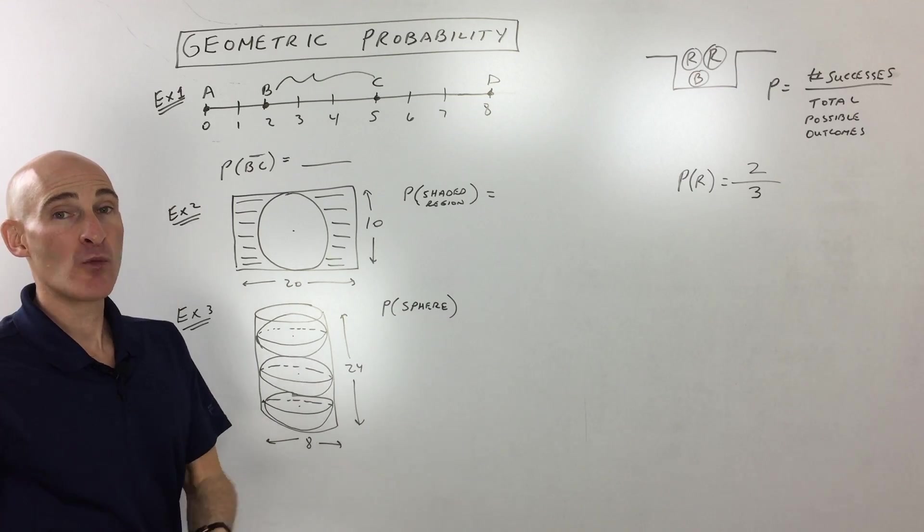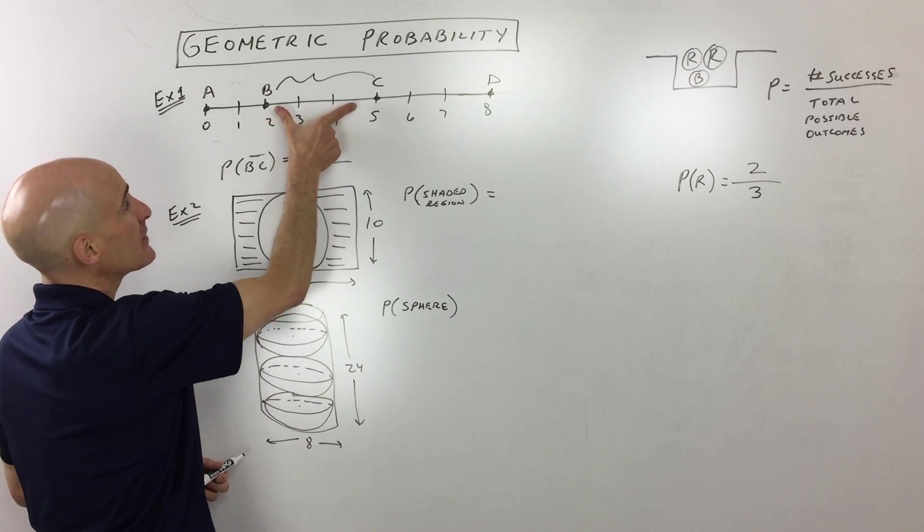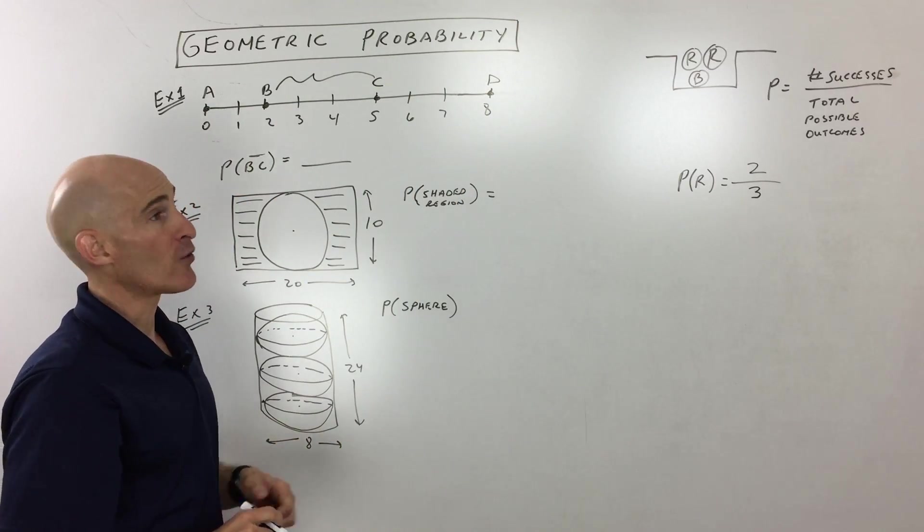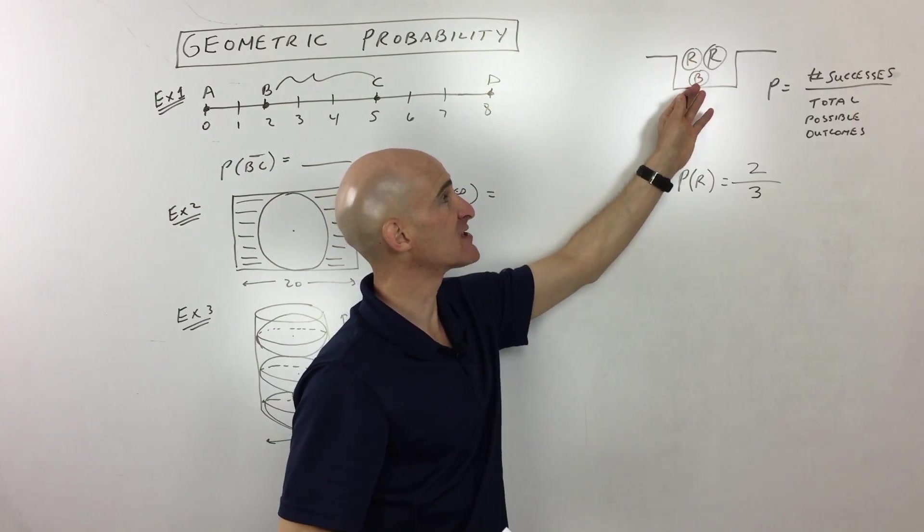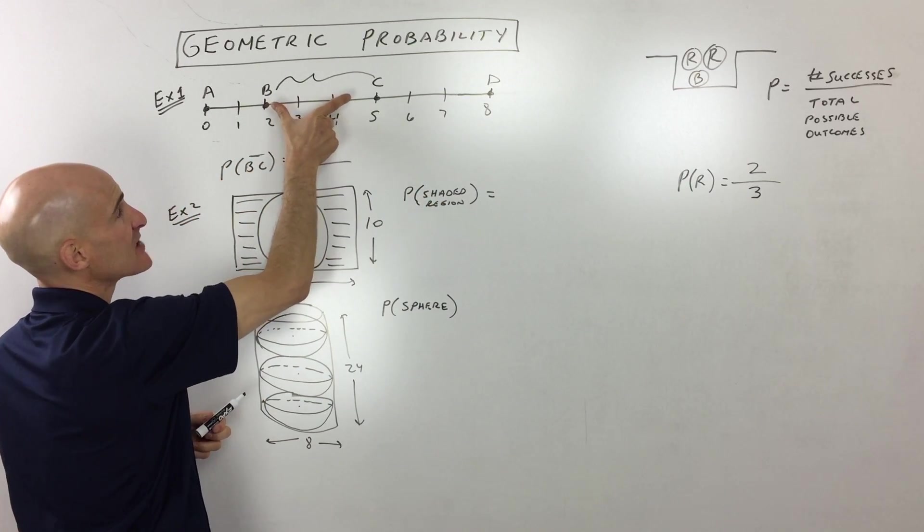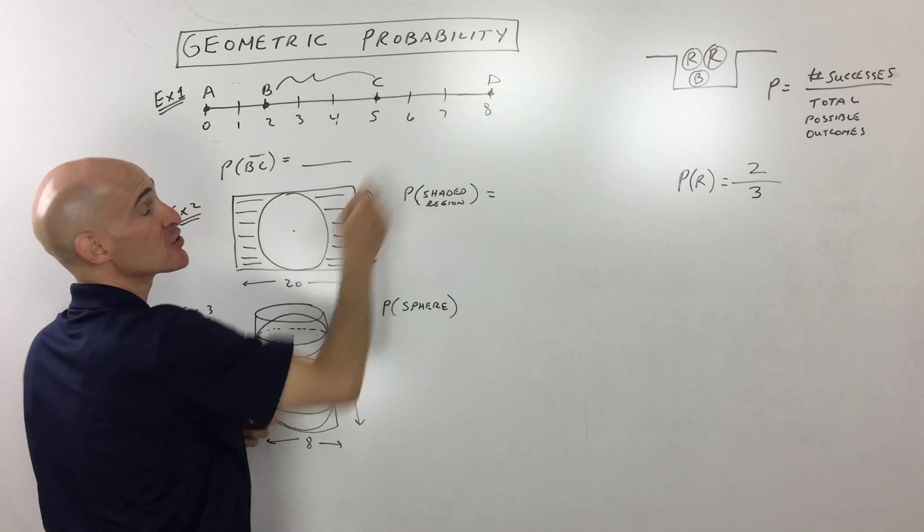Well, now in this problem, what we're thinking about is the length of success divided by the total length. Whereas over here, we were counting the number of successes out of the total possible. Here we're considering the length of success, meaning the length that we want out of the total length.